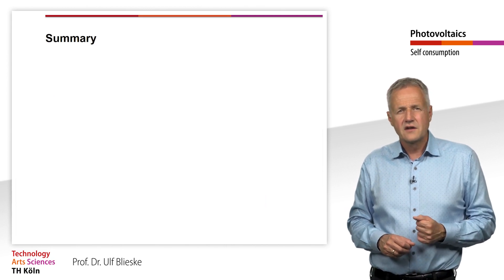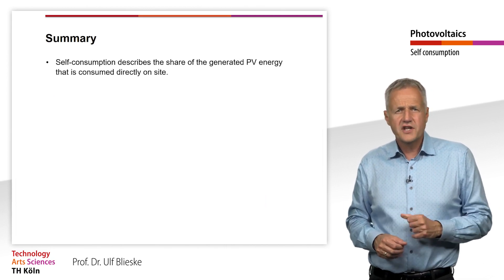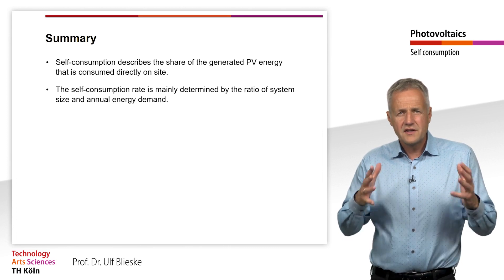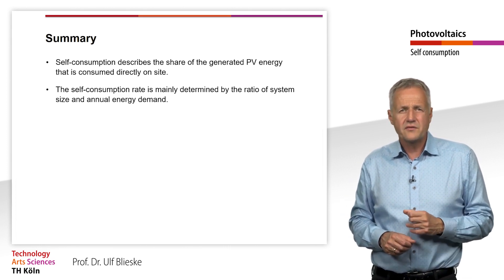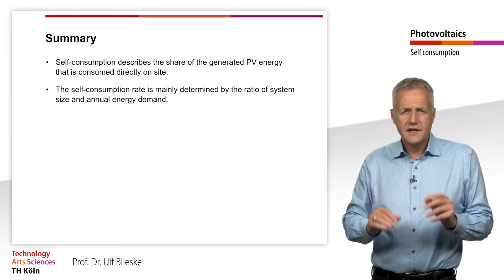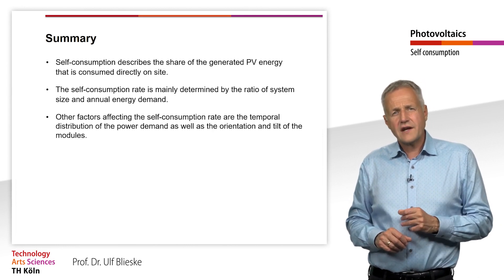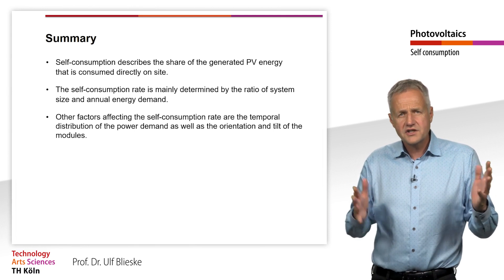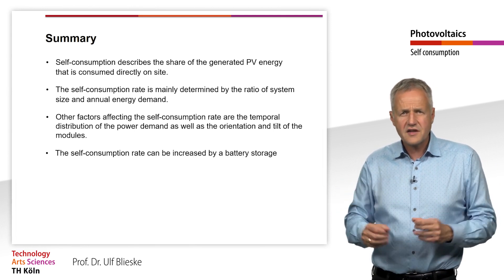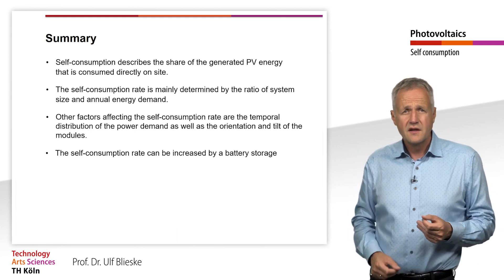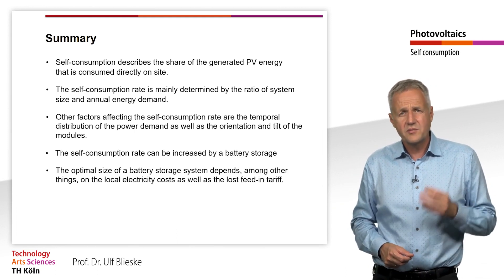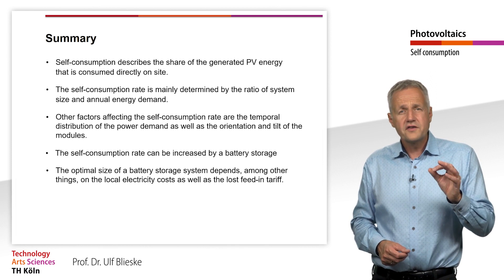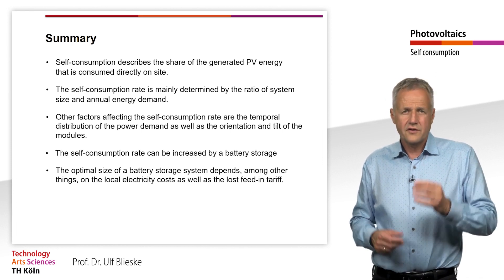Let's summarize this unit. Self-consumption describes the share of the generated PV energy that is consumed directly on site. The self-consumption rate is mainly determined by the ratio of system size and annual energy demand. Other factors include the temporal distribution of power demand as well as the orientation and tilt of the modules. The self-consumption rate can be increased by a battery storage, whose optimal size depends on the local electricity cost as well as the lost feed-in tariff. Thank you for your attention.